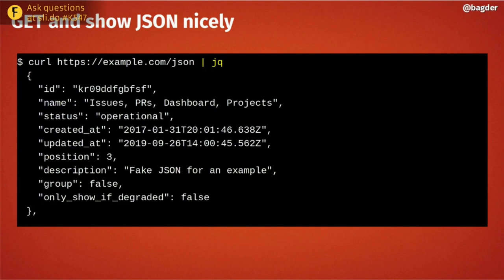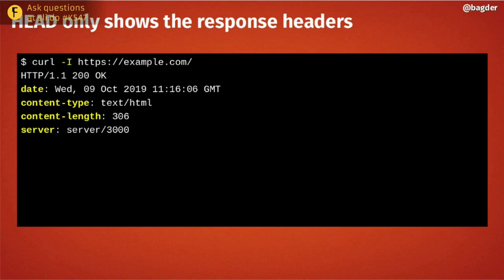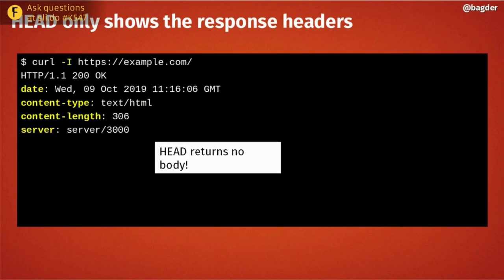You can also check a URL with a HEAD request using the capital-I flag. Just ask the server for details about the resource — you get only the response headers with no body, since HEAD never returns a body. You can see the size, date, server info, and a 200 response code confirming the resource exists.